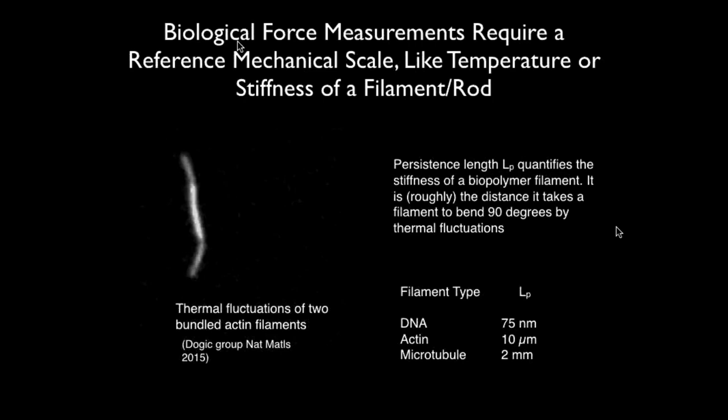For DNA the persistence length is just 75 nanometers; for actin it's about 10 microns; and for a microtubule it's about 2 millimeters — roughly a thousand times larger than for actin. Now I have a question for you: what if I took spaghetti — we might consider it a biopolymer since it's made from biological constituents — what would you think the persistence length of a stick of vermicelli is?